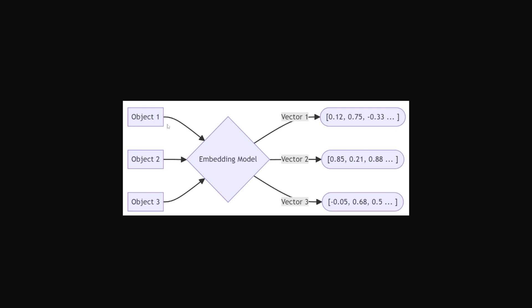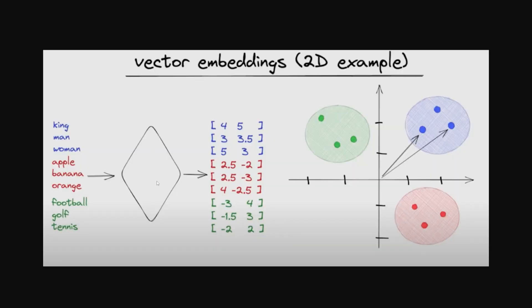This image explains how our embedding works. We have multiple objects — text or images — and we send them to something called an embedding model. The embedding model turns each object into a vector with a bunch of numbers. When we search, the model also takes the query text and turns it to a vector, then searches for the most similar numbers. For example, 'banana' has a vector of [2.5, -2], and the most similar vector to it is [2.5, -3] — so these two vectors are similar, and that's what we get as a result.